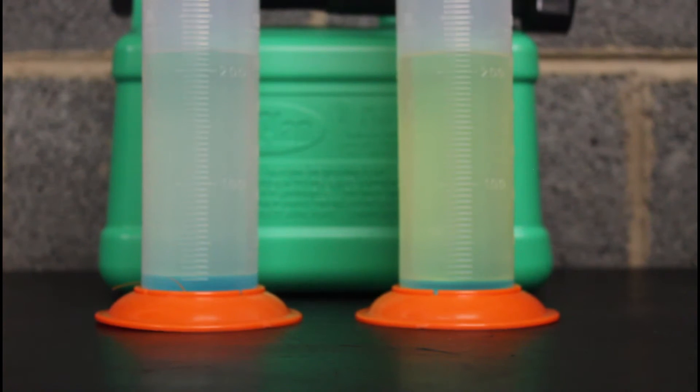Straight away you can see that the unleaded E10 on the left is really clear. Just by pouring that in, it started separating a little bit on the ethanol content at the bottom. The one on the right is noticeably more yellow in color and it smells very strong compared to the normal E10. The Momentum does smell a lot stronger and it's more of a yellowy color.